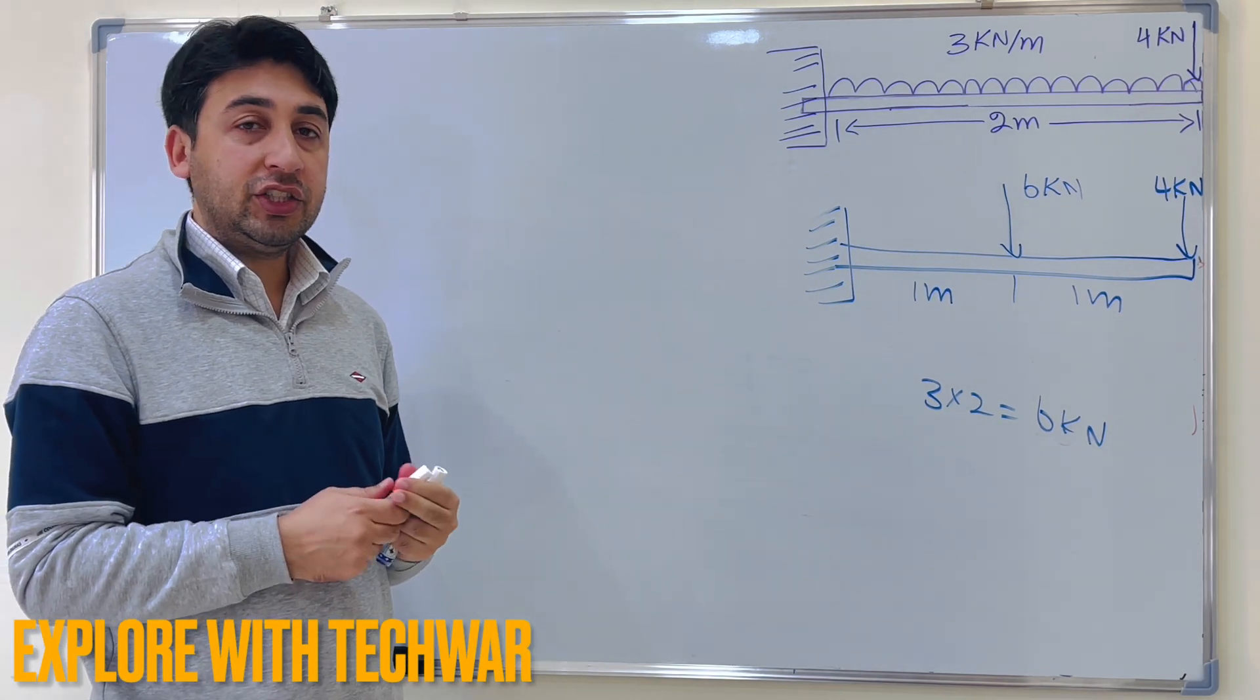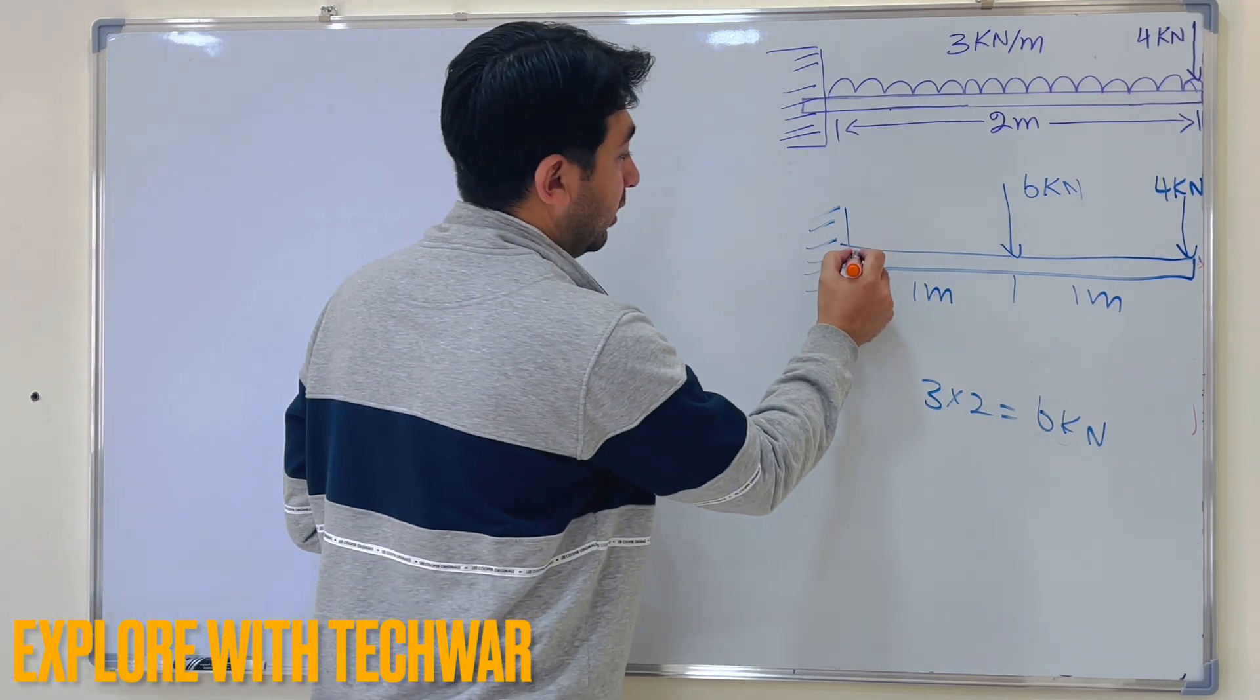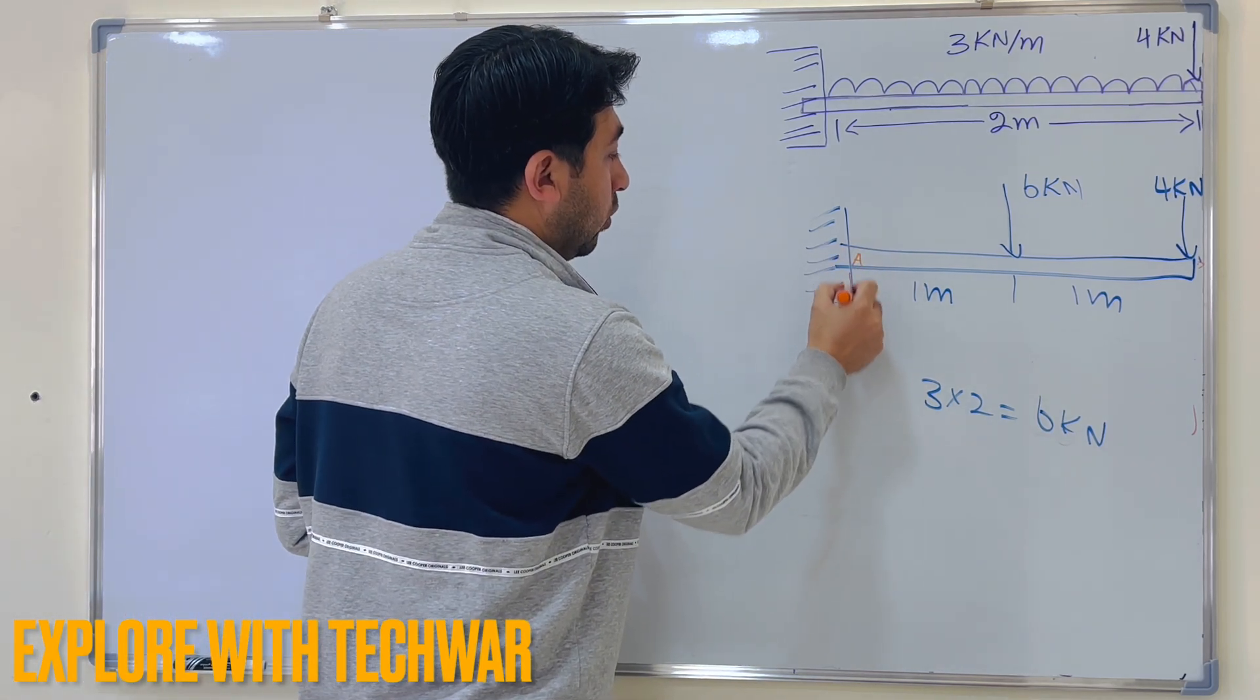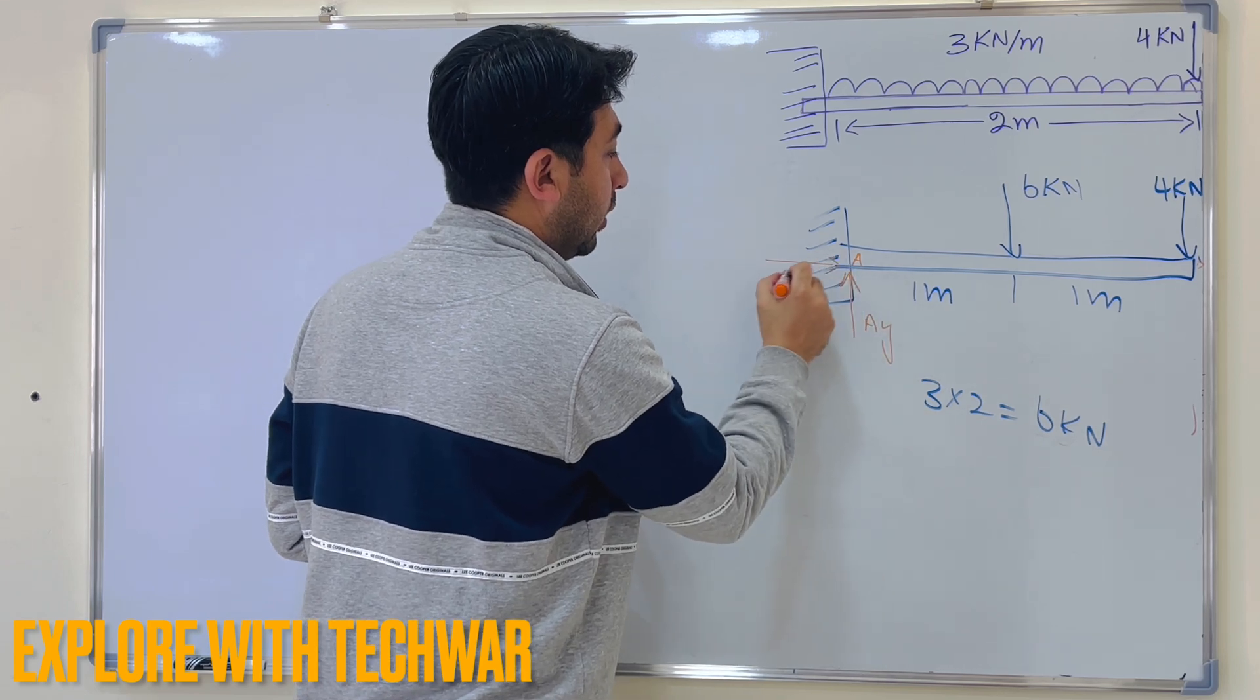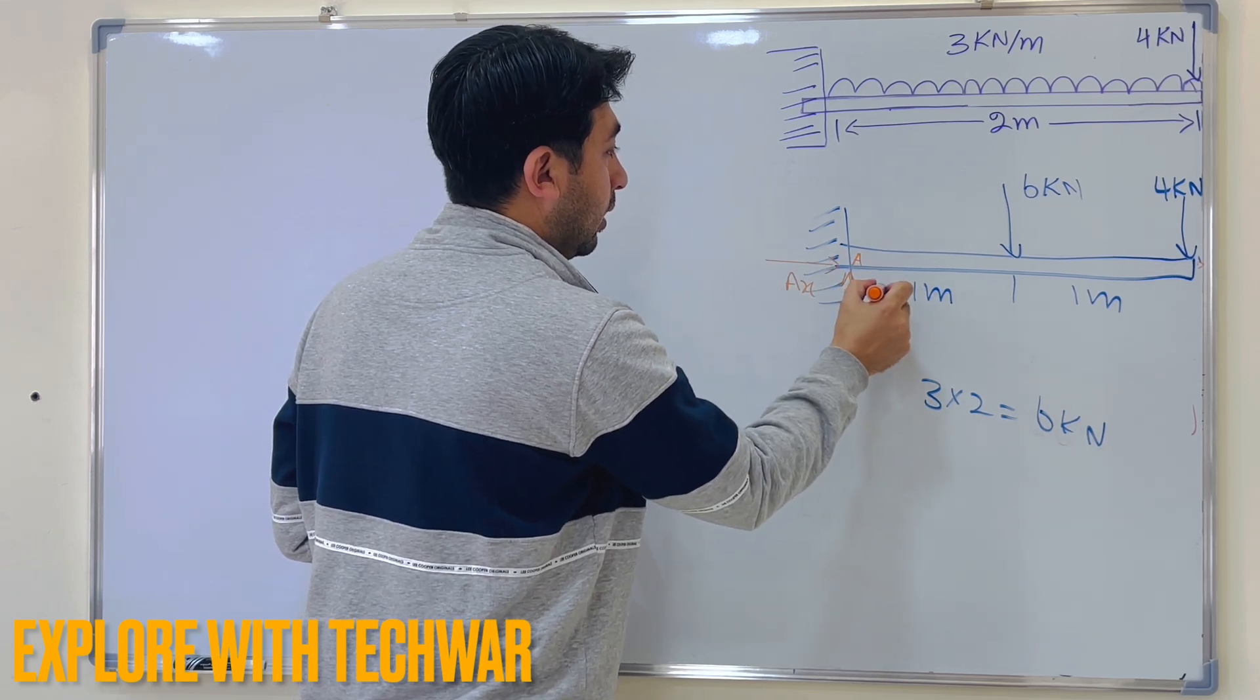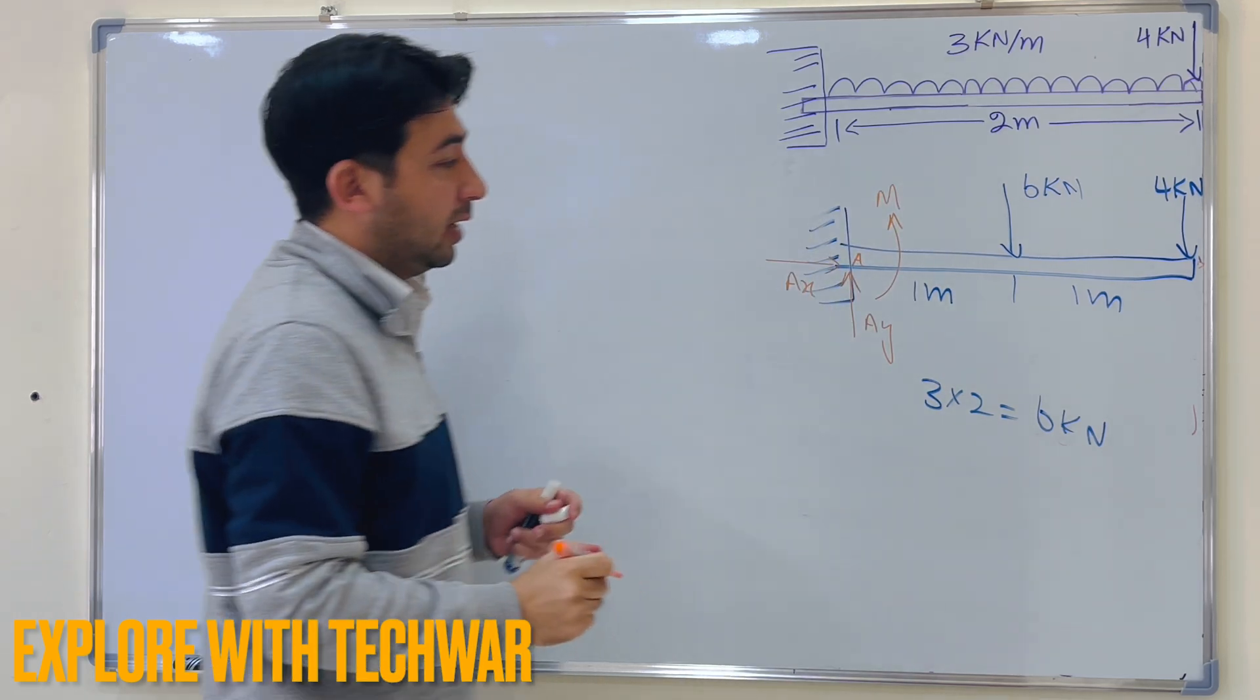We need to find reaction at the fixed support here. Now we know that at fixed support, let's say this is point A, we have 3 reactions: AY, we have AX, and we will have moment as a reaction.